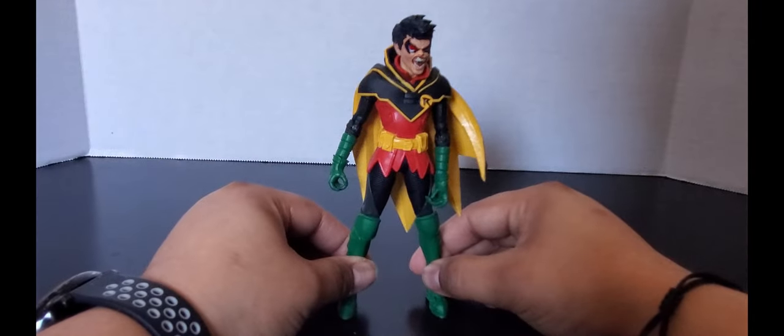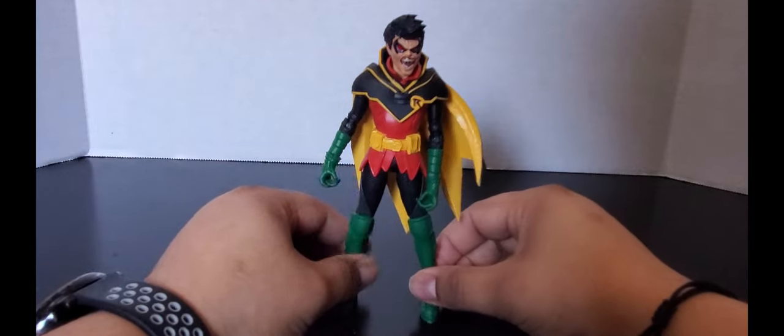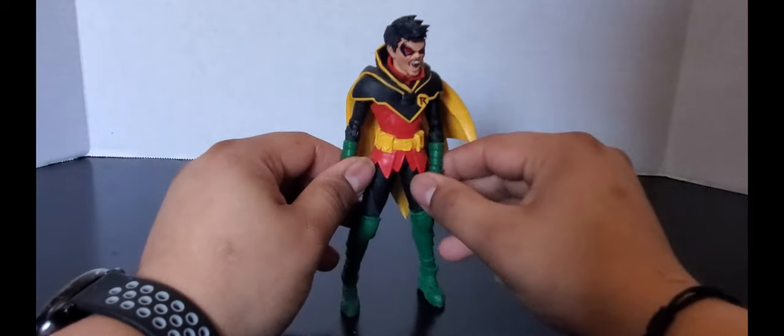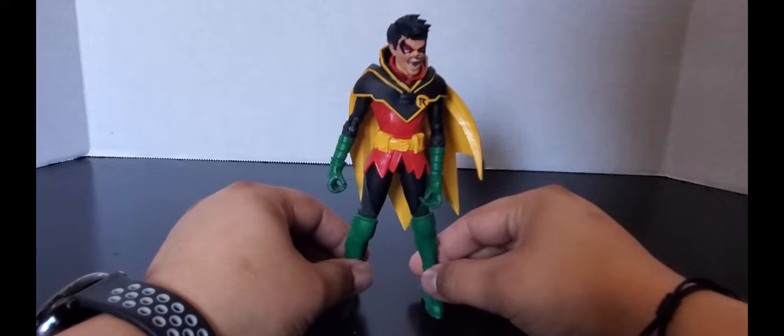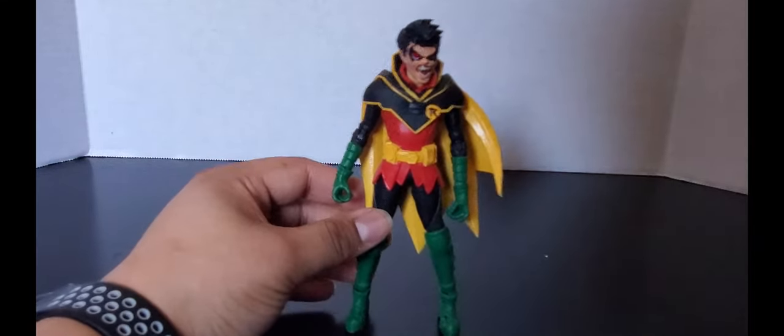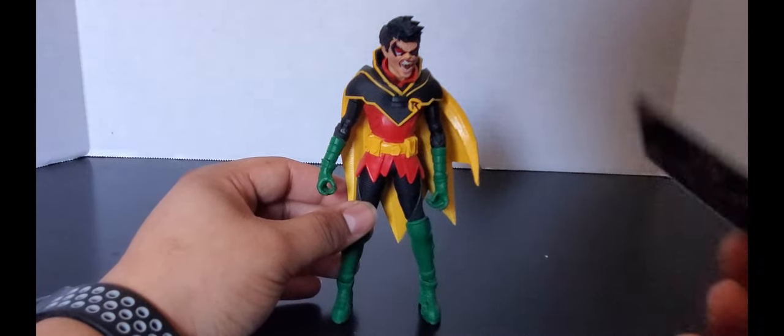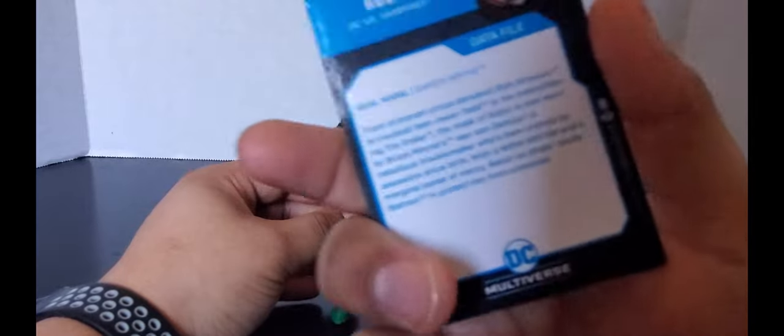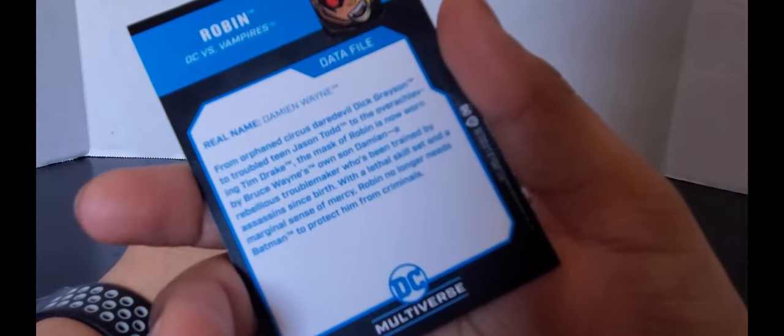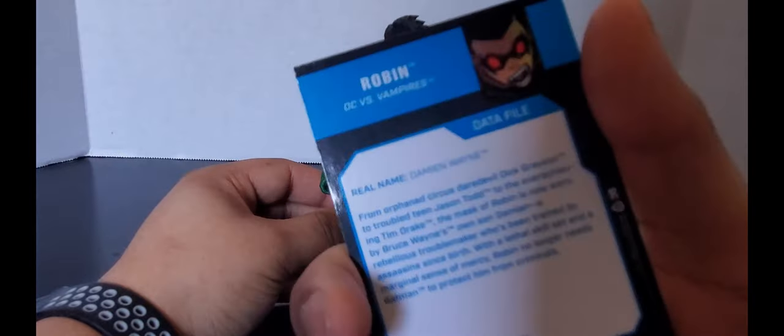This is a generic size for DC Multiverse Robin, running about 7 inch base. They are usually bigger than most of the ones, some of them are a little oversized. It comes with a display stand which I actually like that McFarlane has display stands. A little trading card with a nice little read up that I read at the beginning of the video, just nothing specific to this comic run, just a generic Robin read up.